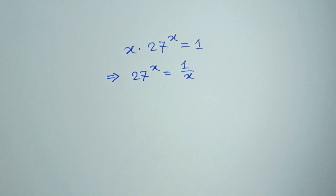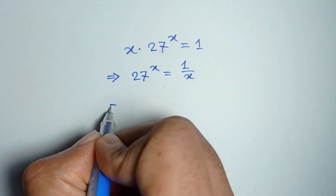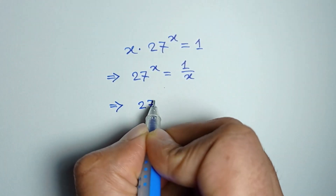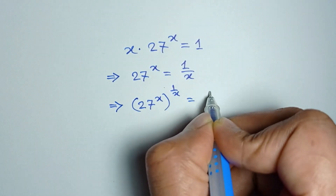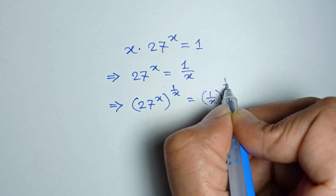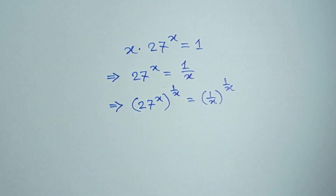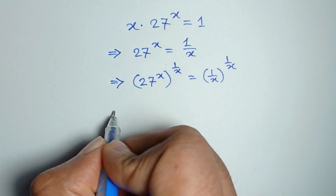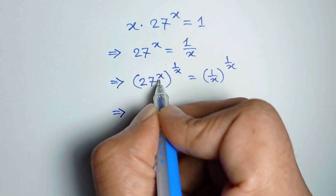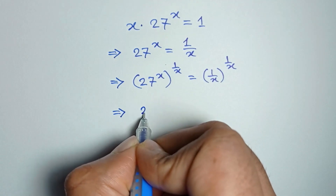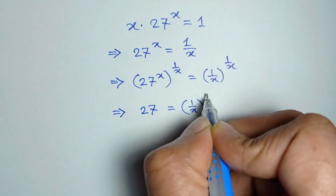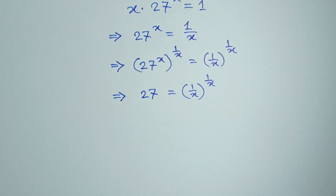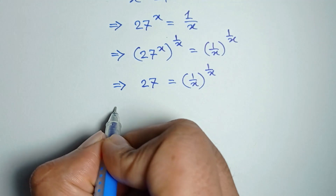If we raise both sides to the power 1/x, we get 27 to the power x, whole to the power 1/x, is equal to 1/x whole to the power 1/x. Here x and 1/x cancel out, so 27 is equal to 1/x to the power 1/x.